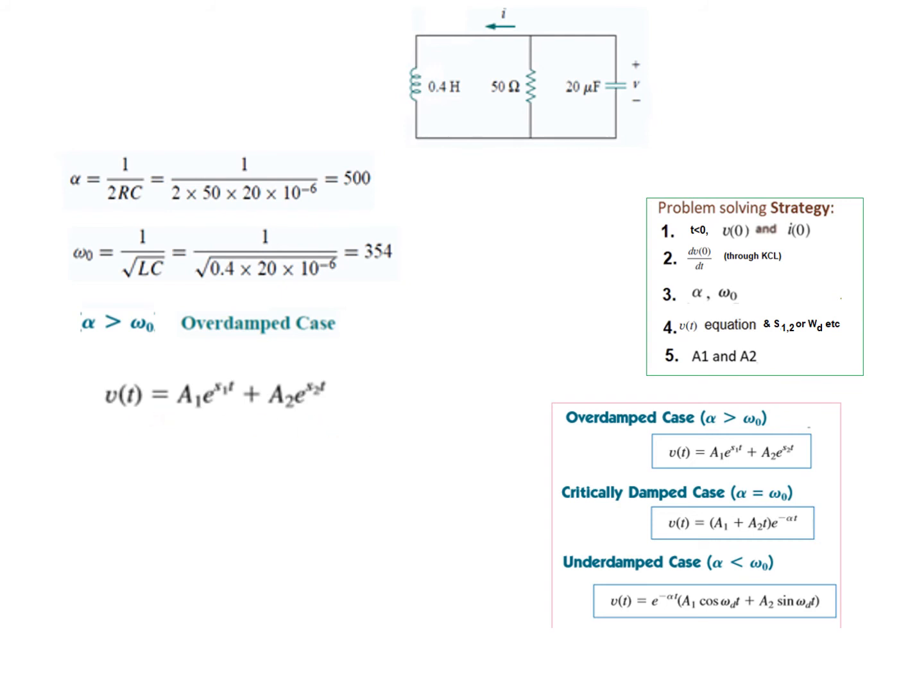Now two unknowns here S1 and S2. So we have to calculate those. We know from the formula S1 and S2 is given by this formula. Plugging in the value of alpha and omega, we get this result. From here we can write that S1 is minus 854 and S2 is minus 146. Now we plug in the value of S1 and S2 to get the general equation. So this is our general equation.